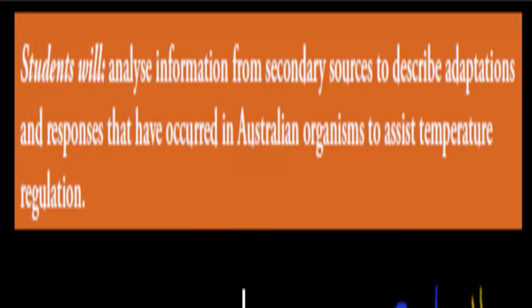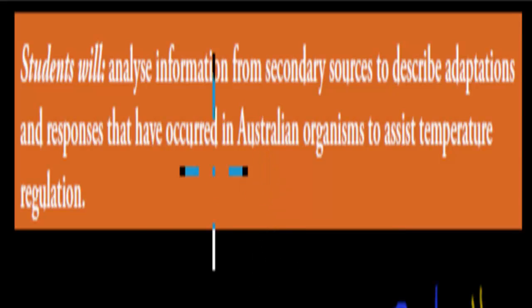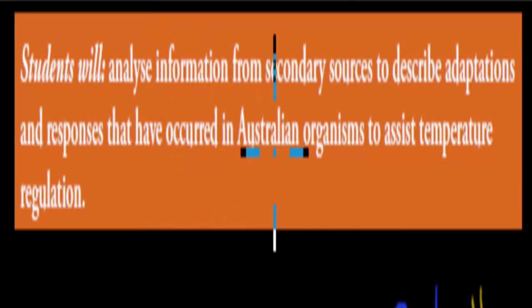Welcome back. In the last video, we talked about endotherms and ectotherms, and we named some of their responses to the rise or fall in temperature, and explained how those responses help them regulate temperature. In this video, we're going to cover the next dot point, which is quite similar. We're going to cover Australian ectotherms and endotherms. The dot point says: analyze information from secondary sources to describe adaptations and responses that have occurred in Australian organisms to assist temperature regulation.